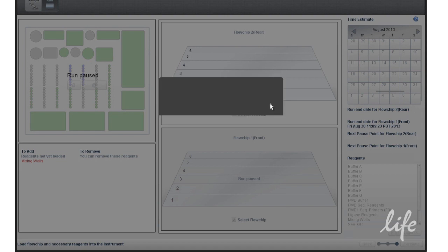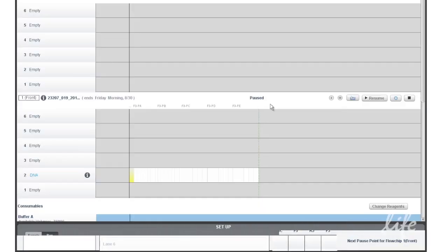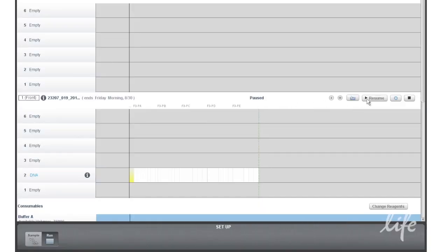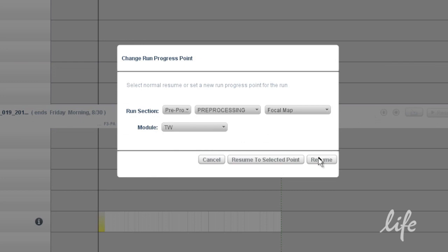Click OK on the pop-up window, then click resume at the following module. One section is preprocessing, the module is TW.